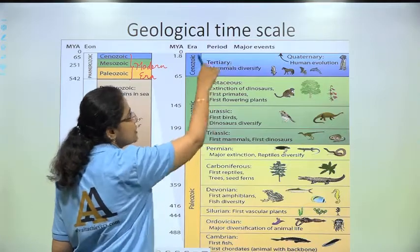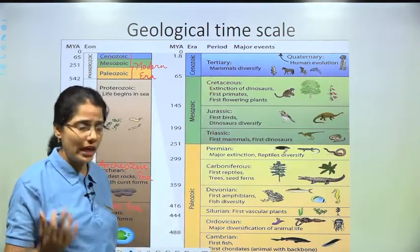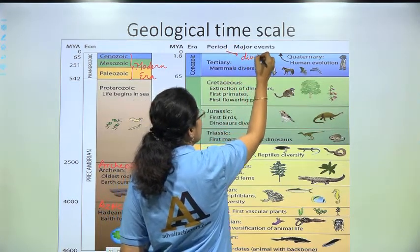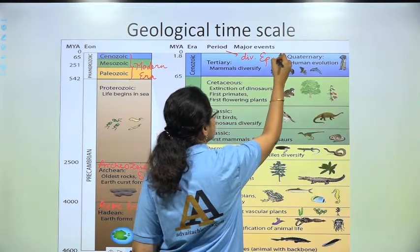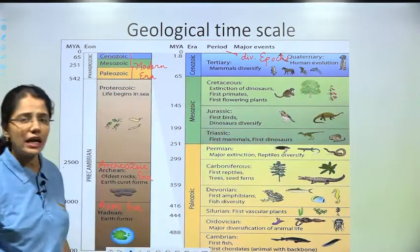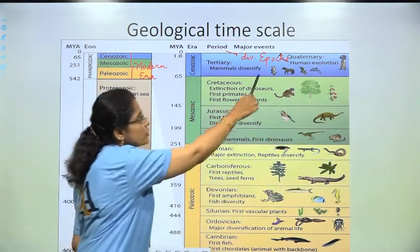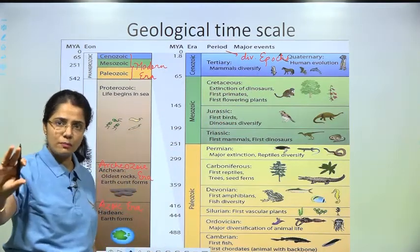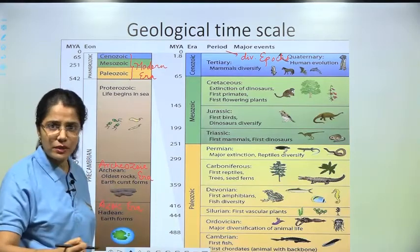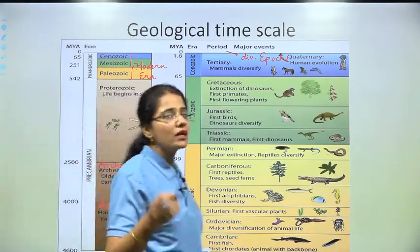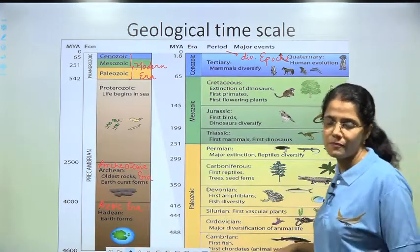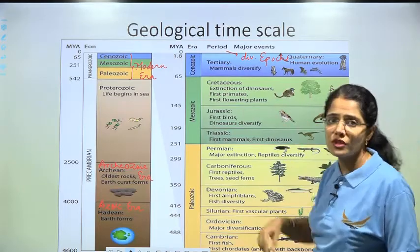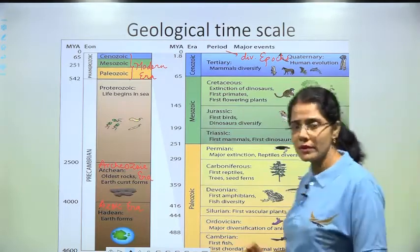These periods are further divided into epochs. The reason I am mentioning epochs is that when we study the evolution of the horse, we need to know in which period or epoch each type of horse existed. So we have to remember the names of the epochs.